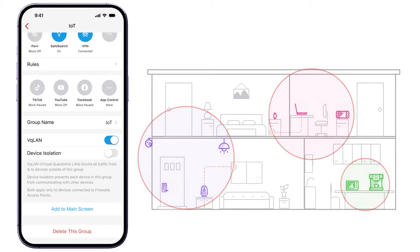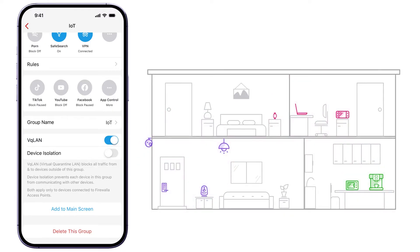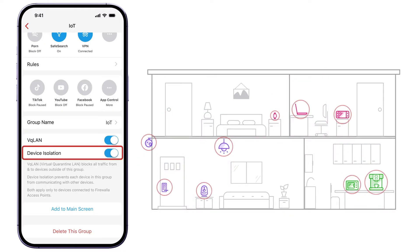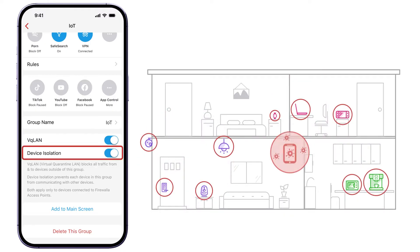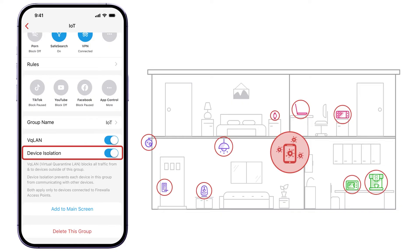To further enhance this micro-segment, turn on device isolation. Device isolation will isolate each device within the same group, preventing them from talking to each other.